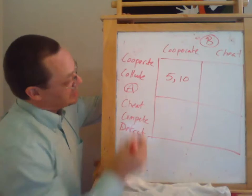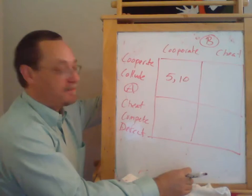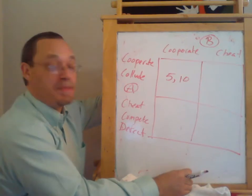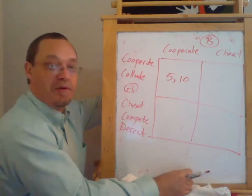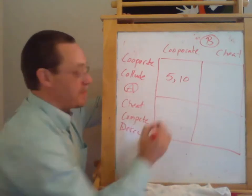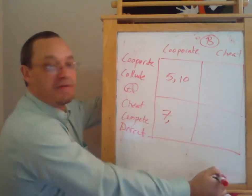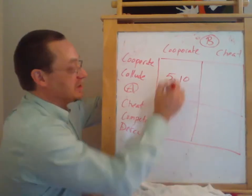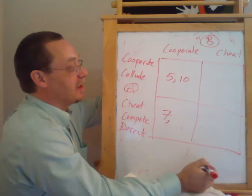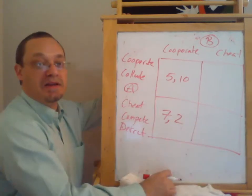And if Firm A stabs B in the back, so B is being a good or evil, I guess, depending on how you look at it, a cartel member, and is being cooperative. But Firm A stabs them in the back, then Firm A steals market share from Firm B and gets profits of seven instead of five. But this really hurts Firm B, and Firm B gets profits of two.